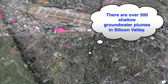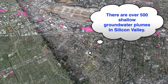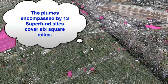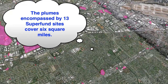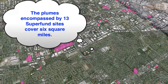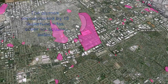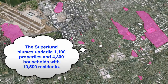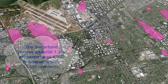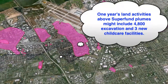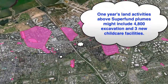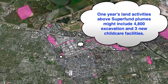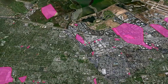This map image is of Silicon Valley, and the pink represents the groundwater plumes that occur across Silicon Valley. Some metrics for 13 Superfund sites cover approximately 6 square miles and impact as many as 10,500 residents. Land activity is intense in these plumes — 4,800 excavations per year, or three new child cares starting each year.